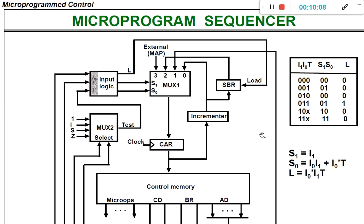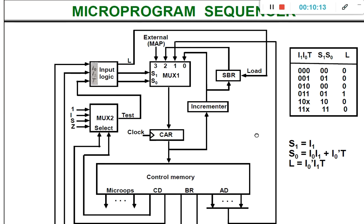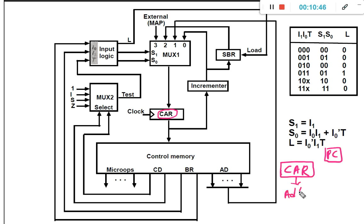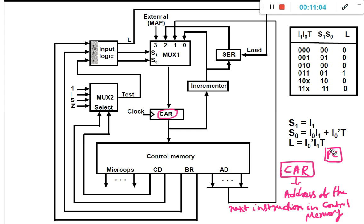The last topic in this chapter is the microprogram sequencer. The aim of the microprogram sequencer is to generate the next address for the control address register (CAR). A control address register is similar to the program counter in machine instructions — whereas PC holds the address of the next machine instruction, CAR holds the address of the next instruction in control memory.